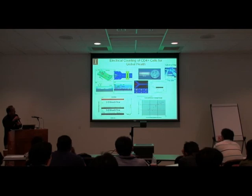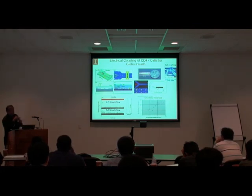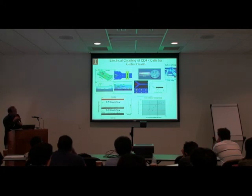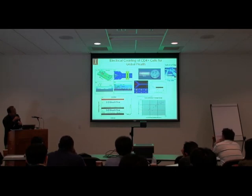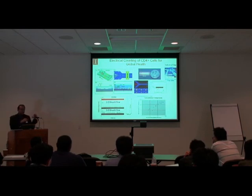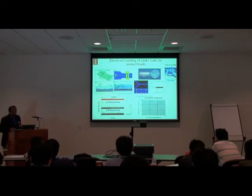This is the impedance signal as a function of time — each spike here is an increase in impedance for a cell flowing by. With 3D sheet flow we get better signal-to-noise ratio because the cells are now closer to the electrode. This is an electrical counter that we compared to a flow cytometer and it works pretty well — our counter can count cells as well as a flow cytometer. We're continuing this work and now trying to add specificity so we can specifically capture and count cells.